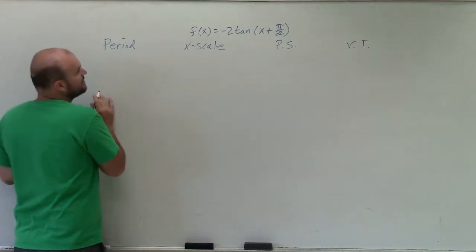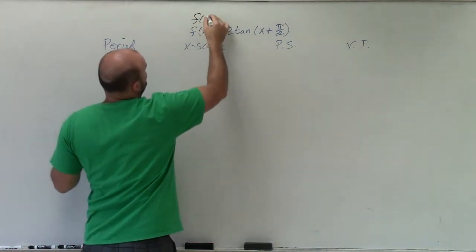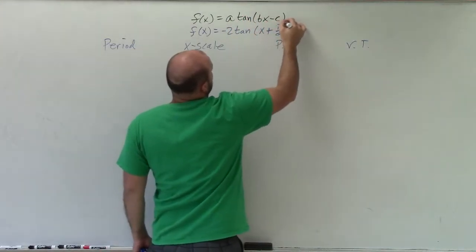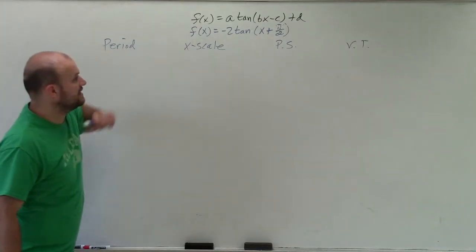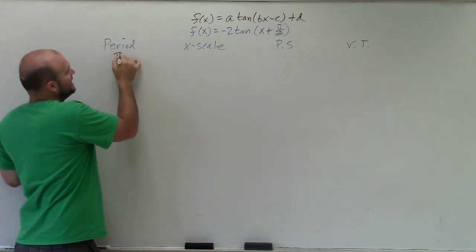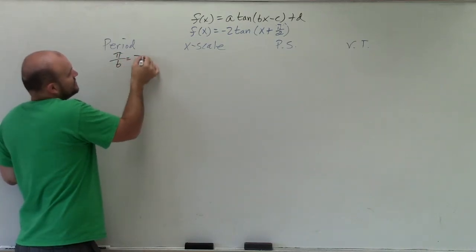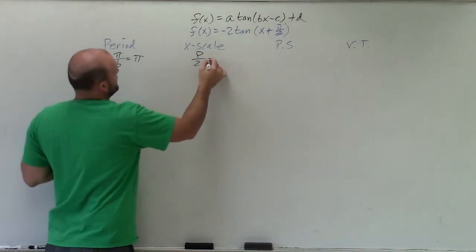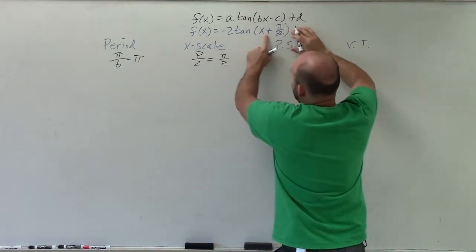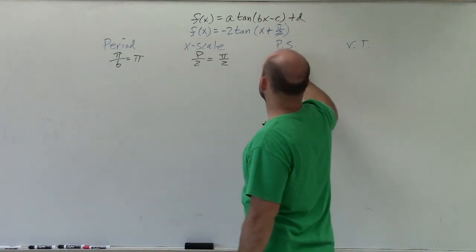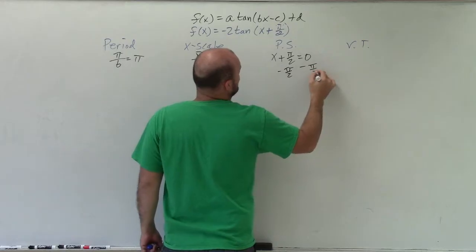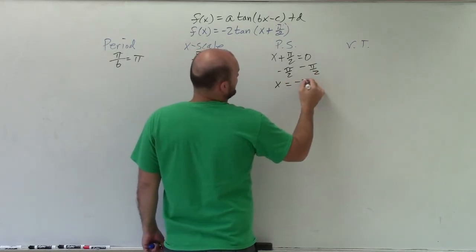So, period — for tangent, where do we get all this information? Remember the standard form is a times tan of (bx minus c) plus d. We know a is negative 2, but that doesn't really affect us right now. Our period is pi divided by b. Since b is 1, the period is just pi. Our x-scale is the period divided by 2, which is pi halves. The phase shift is found by setting the inside of the function equal to 0 and solving for x: x plus pi halves equals 0, so x equals negative pi halves.